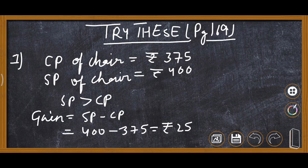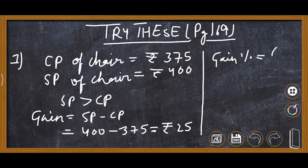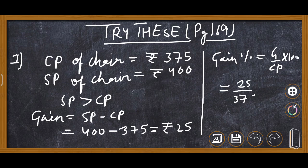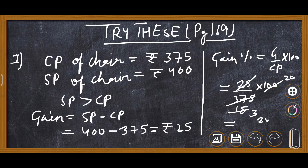The gain is rupees 25, but the question asks for gain percent. The formula is: Gain percent = Gain upon CP into 100. So: 25 upon 375 multiplied by 100. Reducing by 25: 1 over 15. Then 100 over 15 simplifies — 5 threes are 15 — so the answer is 20 upon 3 percent.